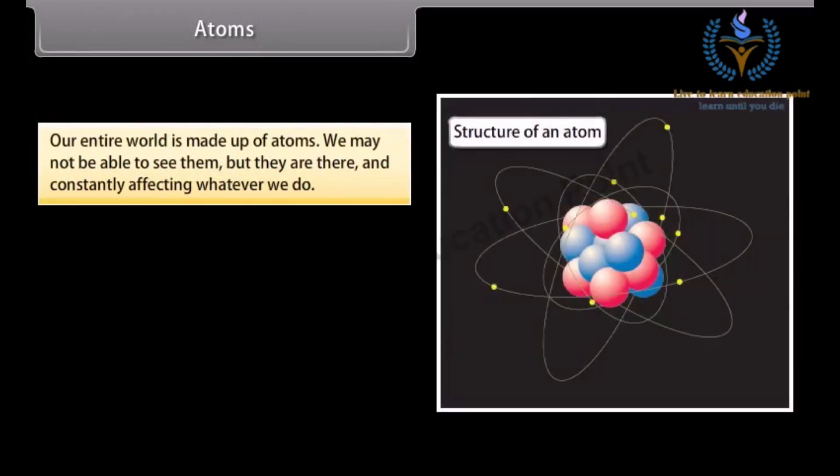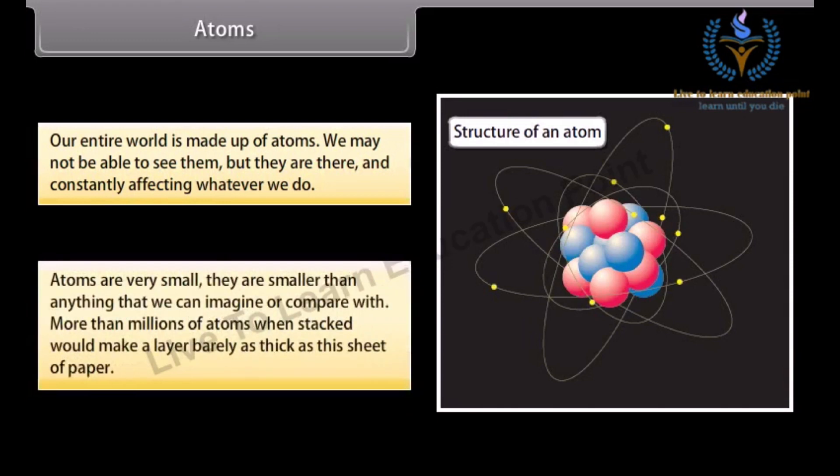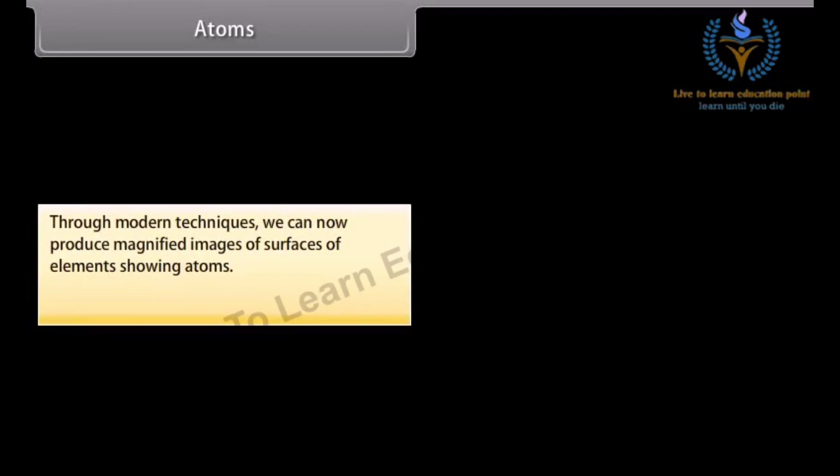Atoms. Our entire world is made up of atoms. We may not be able to see them, but they are there and constantly affecting whatever we do. Atoms are very small, smaller than anything that we can imagine or compare with. More than millions of atoms when stacked would make a layer barely as thick as this sheet of paper. Through modern techniques we can now produce magnified images of surfaces of elements showing atoms.